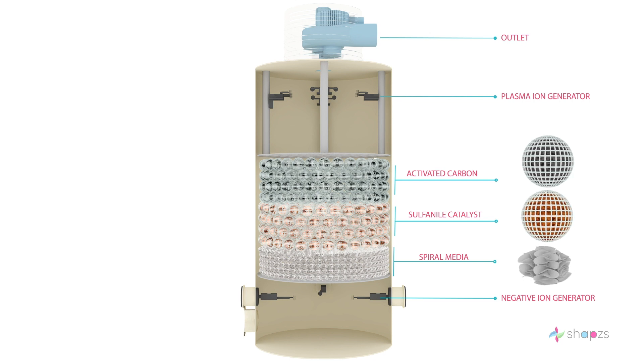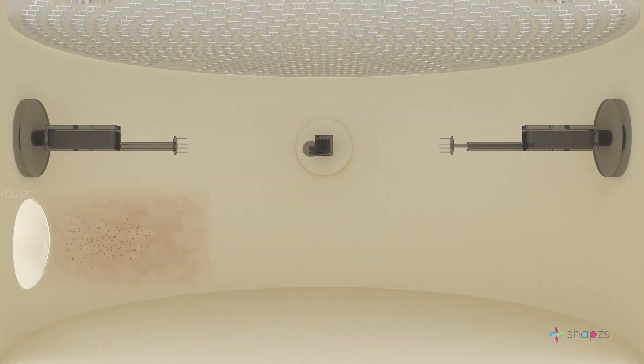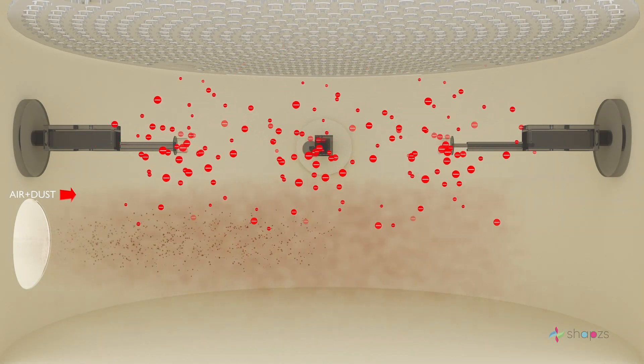Now let's see the ionizing process of odour treatment. The air with dust particles enters the bottom port. The negative ion generators emit negative ions moving out from the negative ion generators.